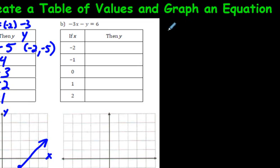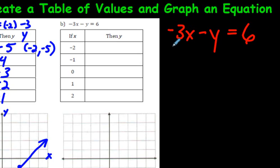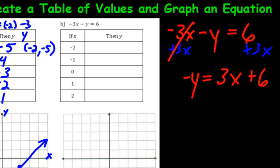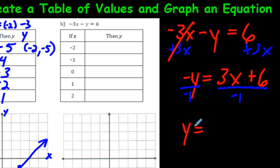To get y all by itself, I want this y alone, so I'm going to move the negative 3x over to the other side by adding 3x to both sides. Those two cancel, and we're left with negative y equals 3x plus 6. The last step is to get rid of the negative — it's like a negative 1 is there. Divide both sides by negative 1, which changes all the signs: the negative y becomes positive y, the 3x becomes negative 3x, and the positive 6 becomes negative 6. So y equals negative 3x minus 6.